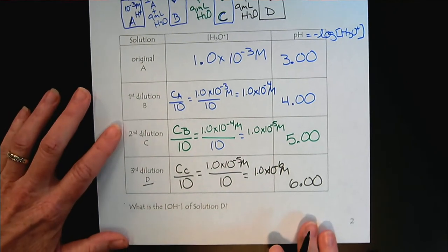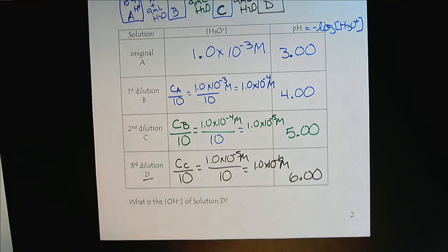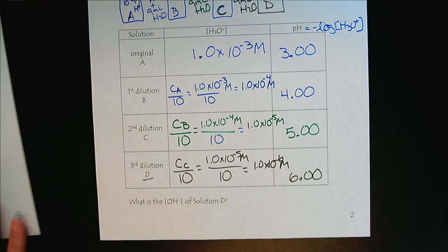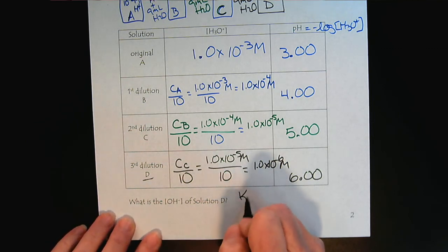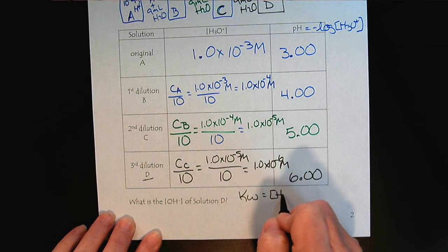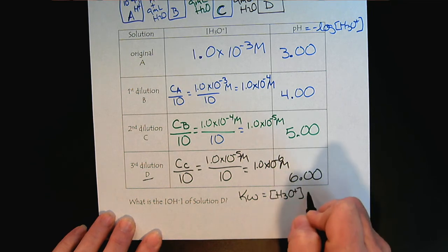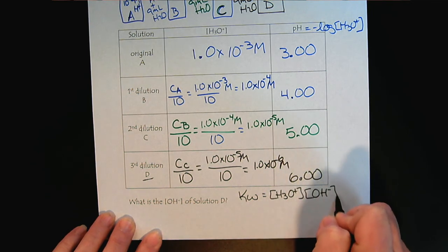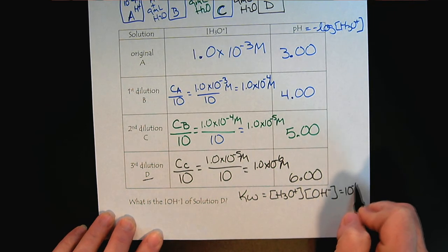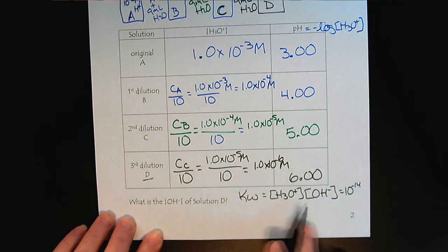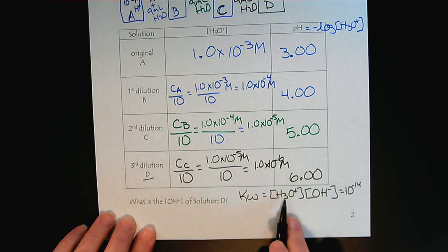And then just to take this opportunity, there's a little space left on the paper. Might as well wrap this around. For solution D, how would we calculate the hydroxide concentration? We would use the KW. So we always know the KW. The KW is 10 to the minus 14.